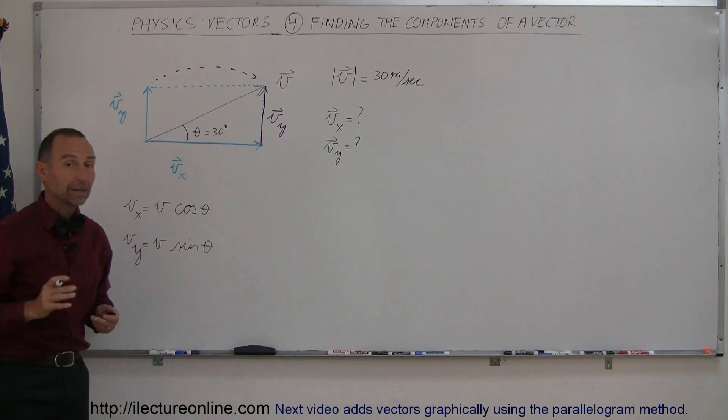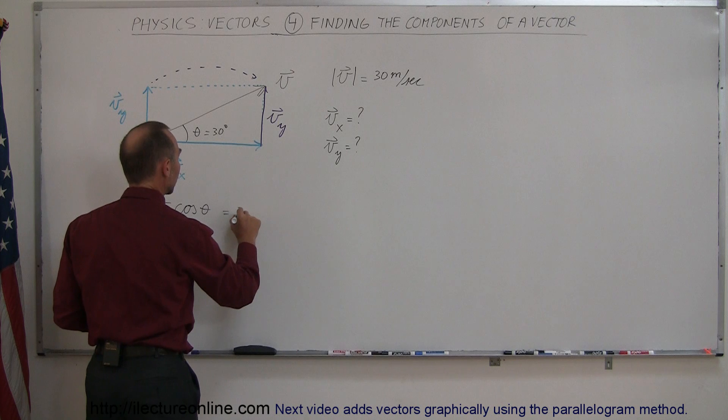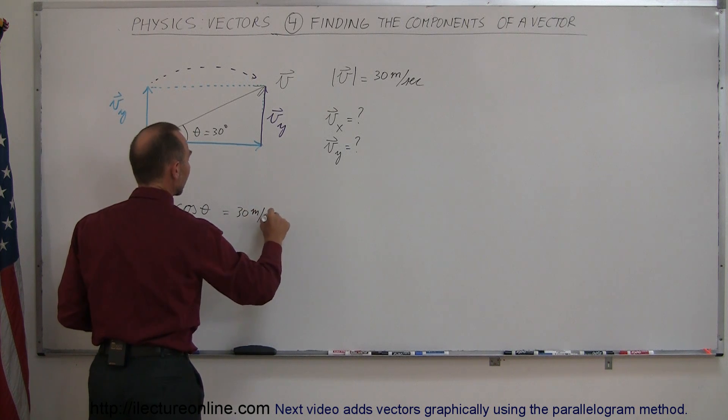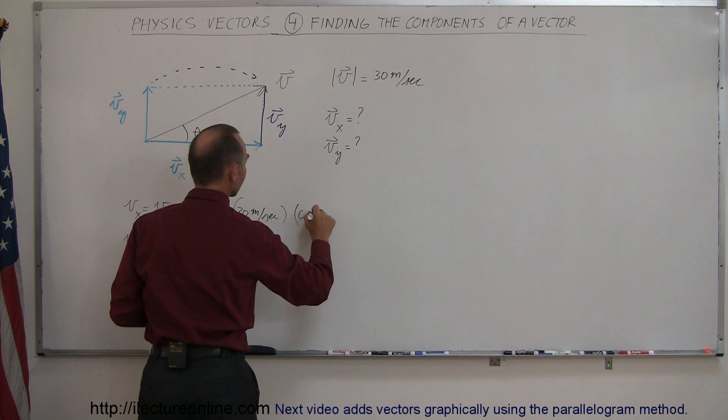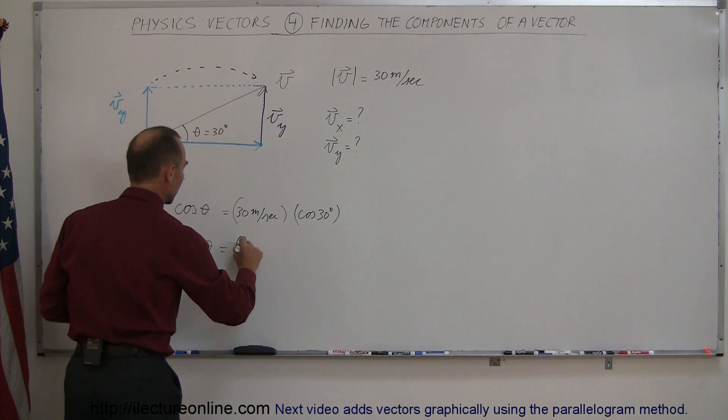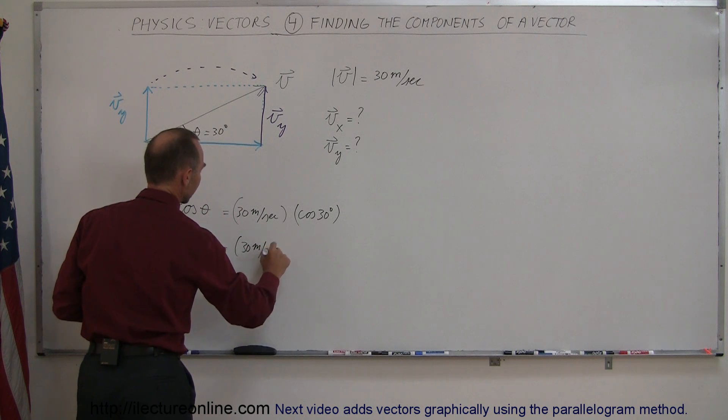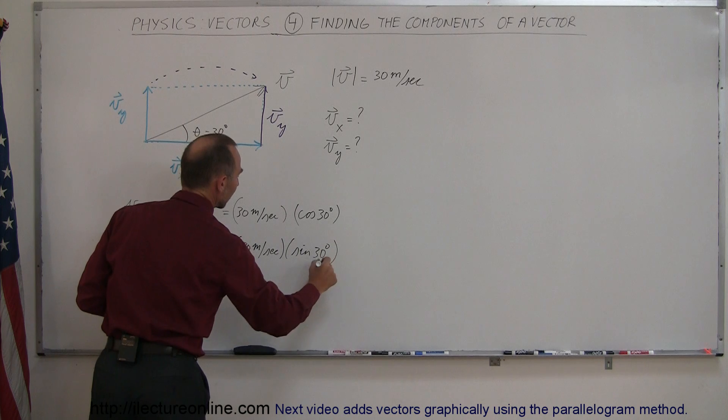And that's how we find the x and the y components, at least the magnitudes of them. So this is equal to 30 meters per second times the cosine of 30 degrees. And this is equal to 30 meters per second times the sine of 30 degrees.